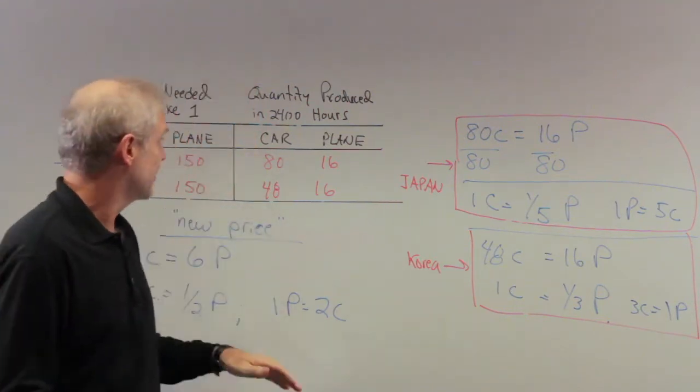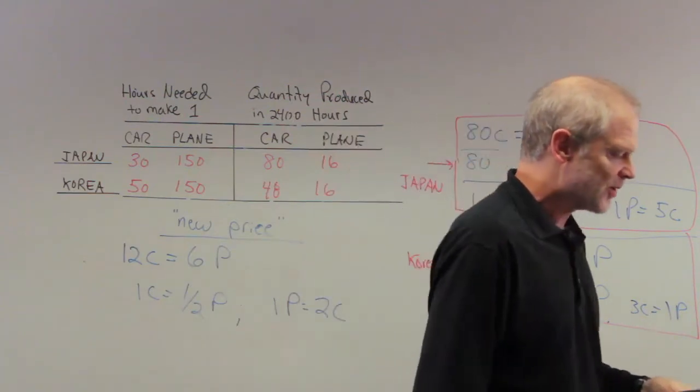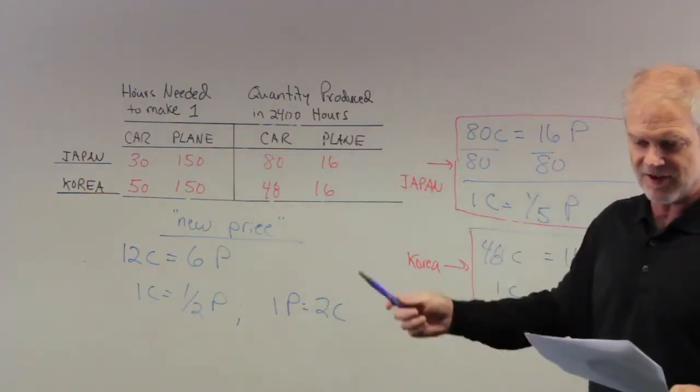It says, refer to Table 3-7. This is our Table 3-7. We've been using this the whole way through. It says, assume that Japan and Korea each has 2,400 hours available. We've done that. There they are.